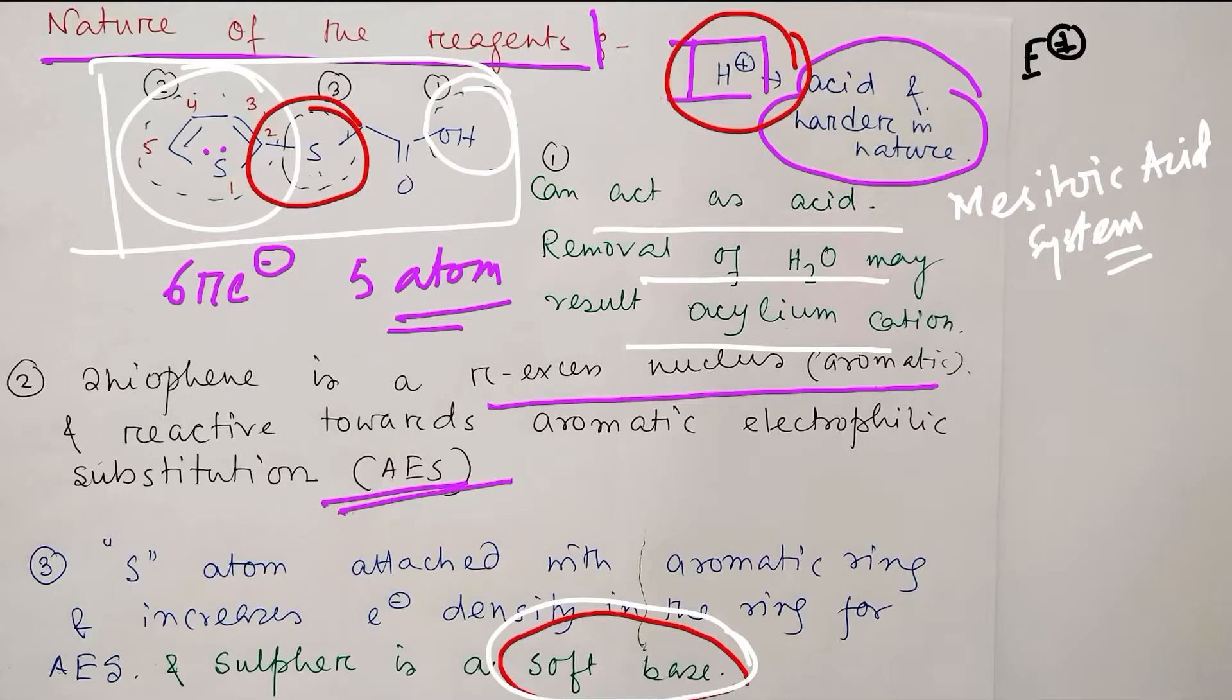Additionally, sulfur is actually a soft base. Why I am telling this? Because proton is a hard acid, sulfur is a soft base, so they will not like each other. So some other thing will happen.